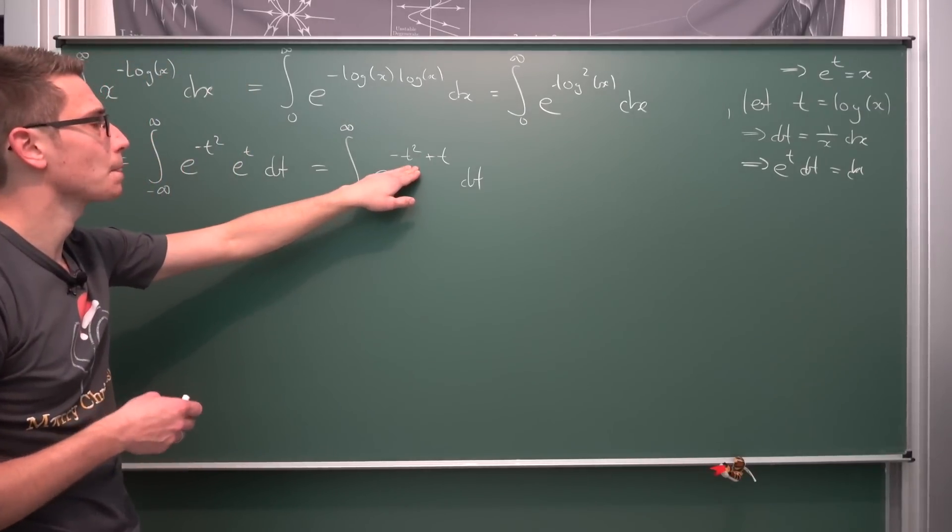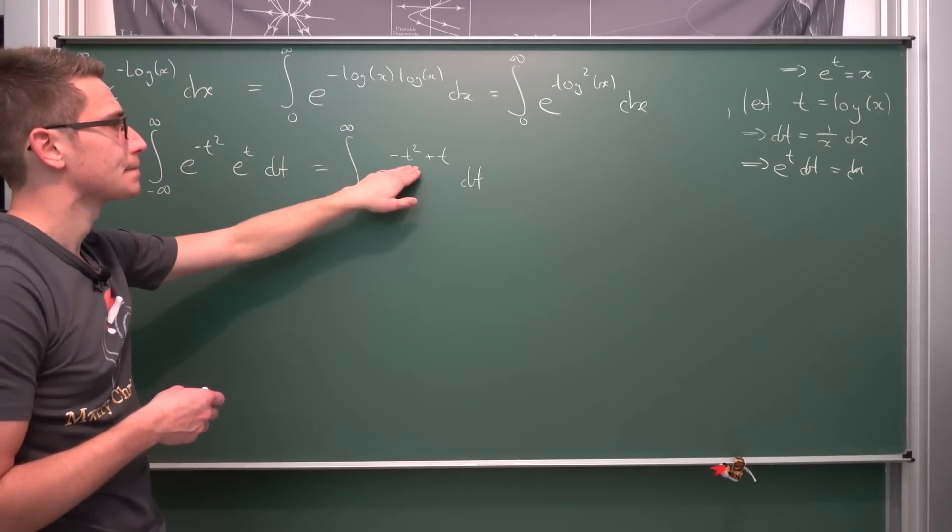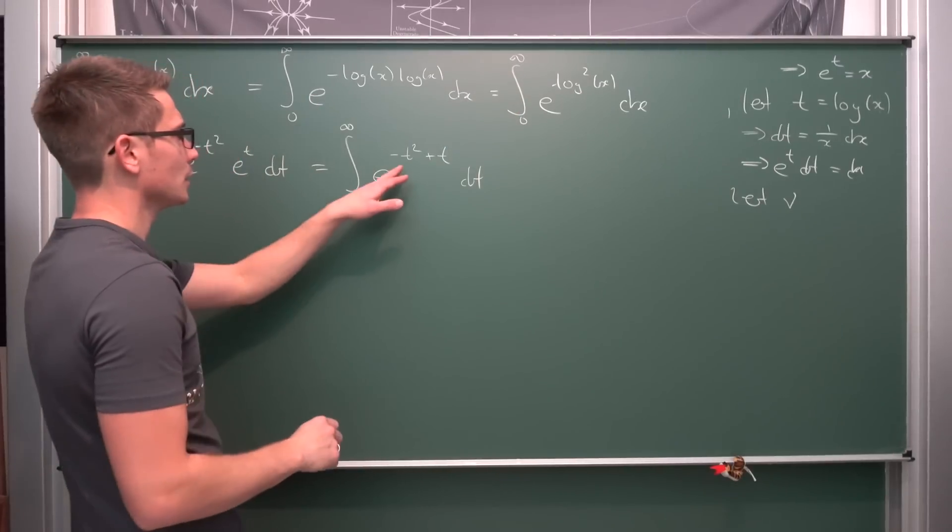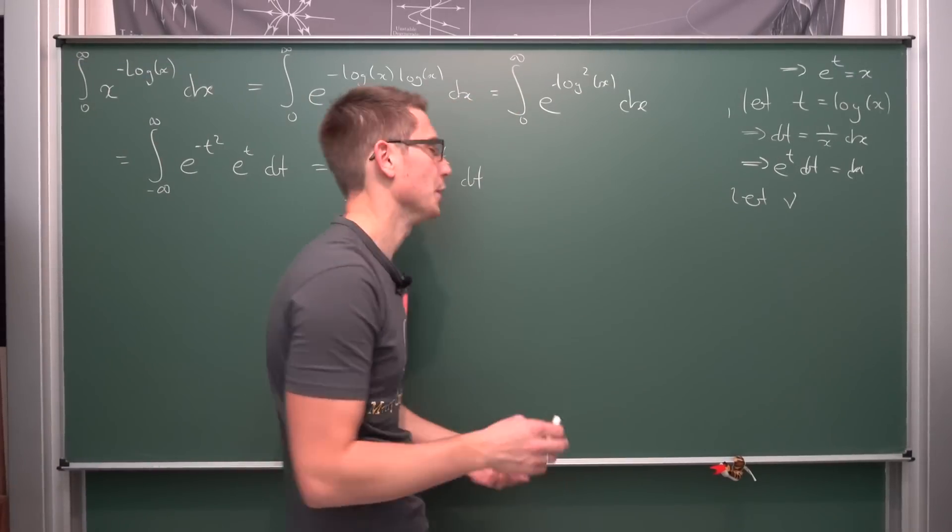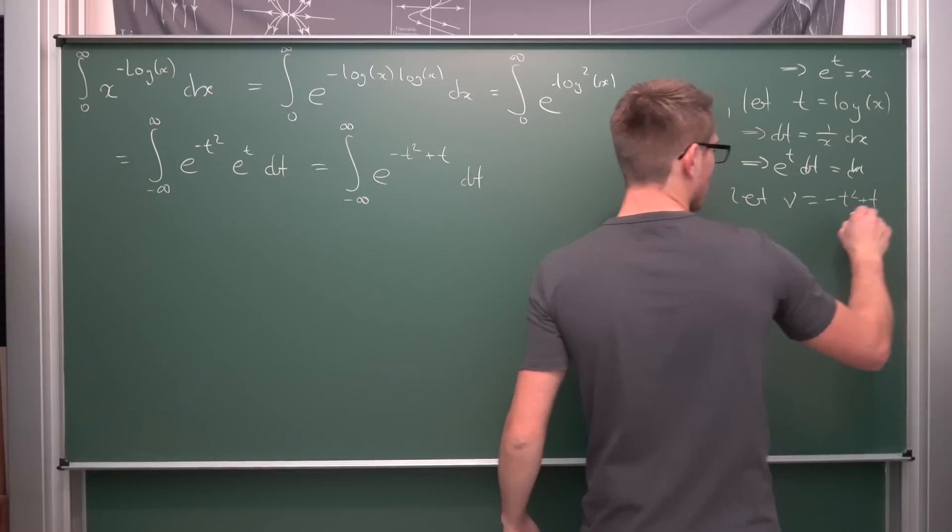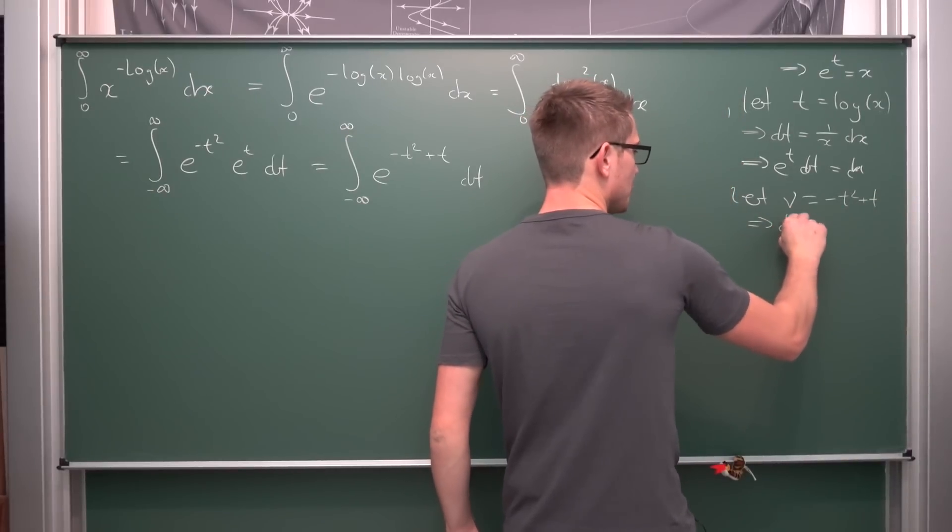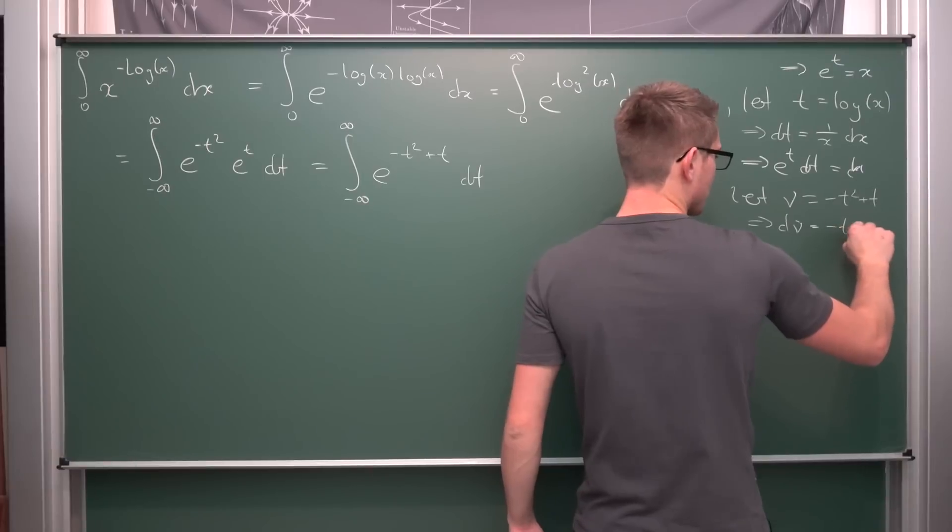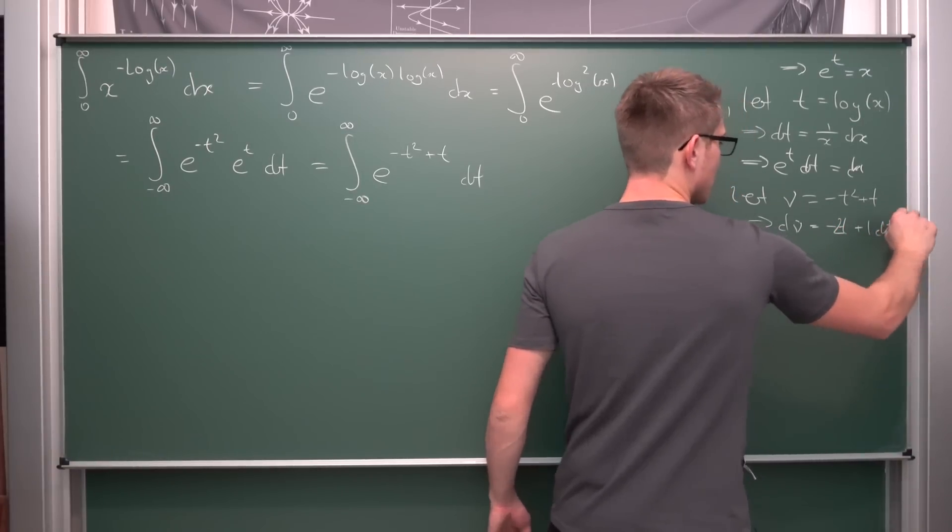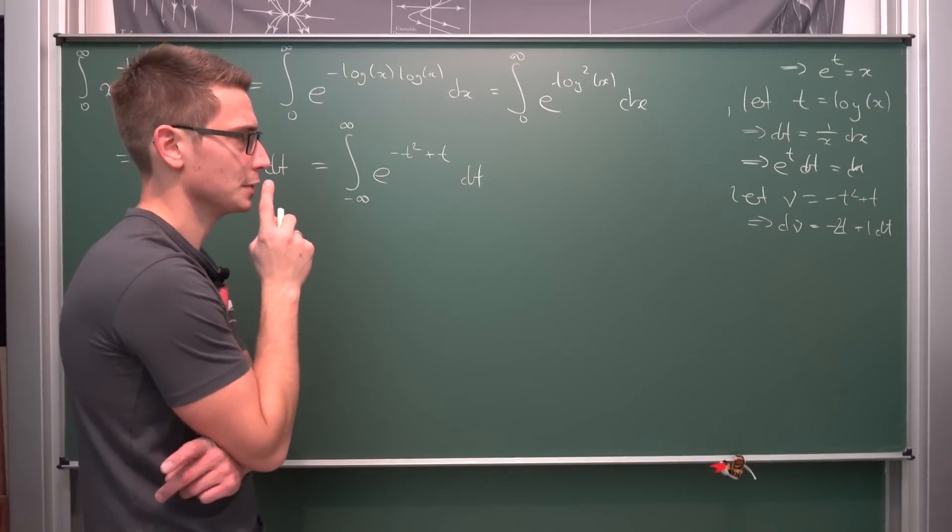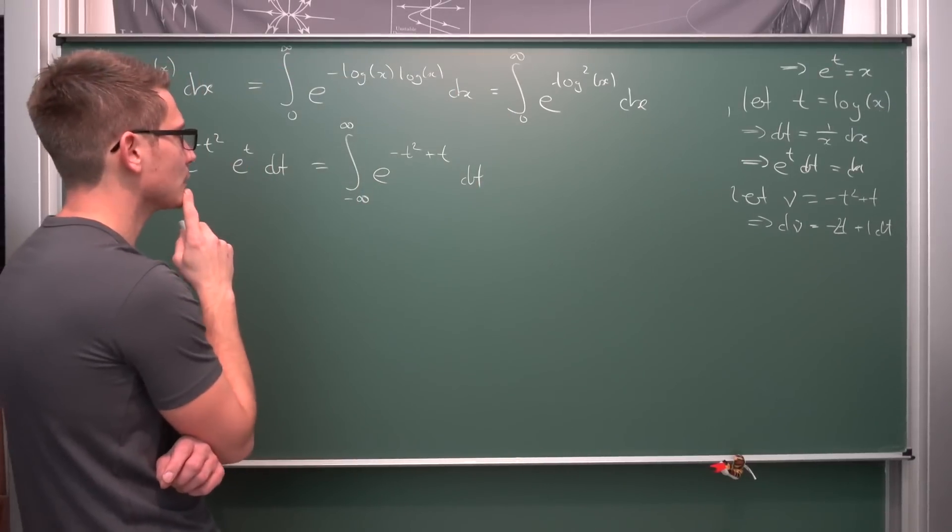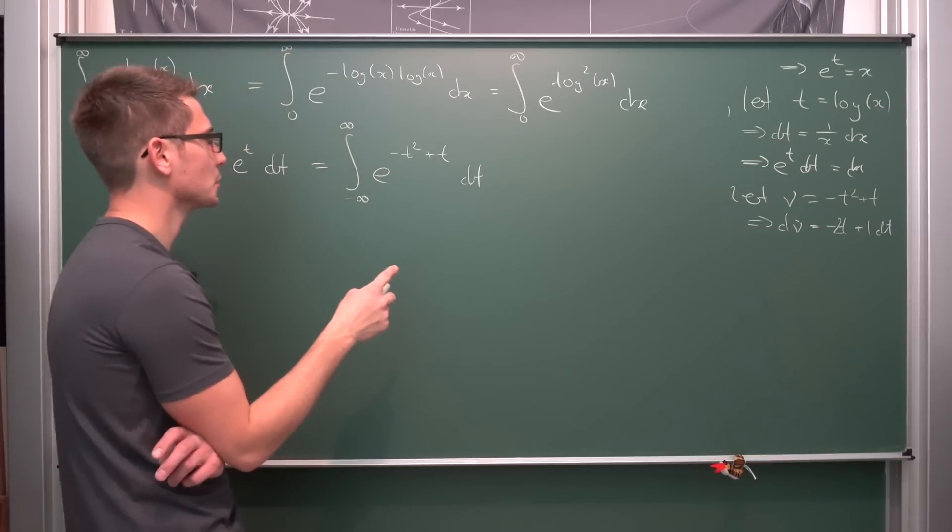If you were to just substitute this right here... Let nu or v, I don't care, be equal to negative t squared plus t. But d nu equals negative 2t plus 1 dt. Then we would need to solve for t, which is not nice. This is really not nice.